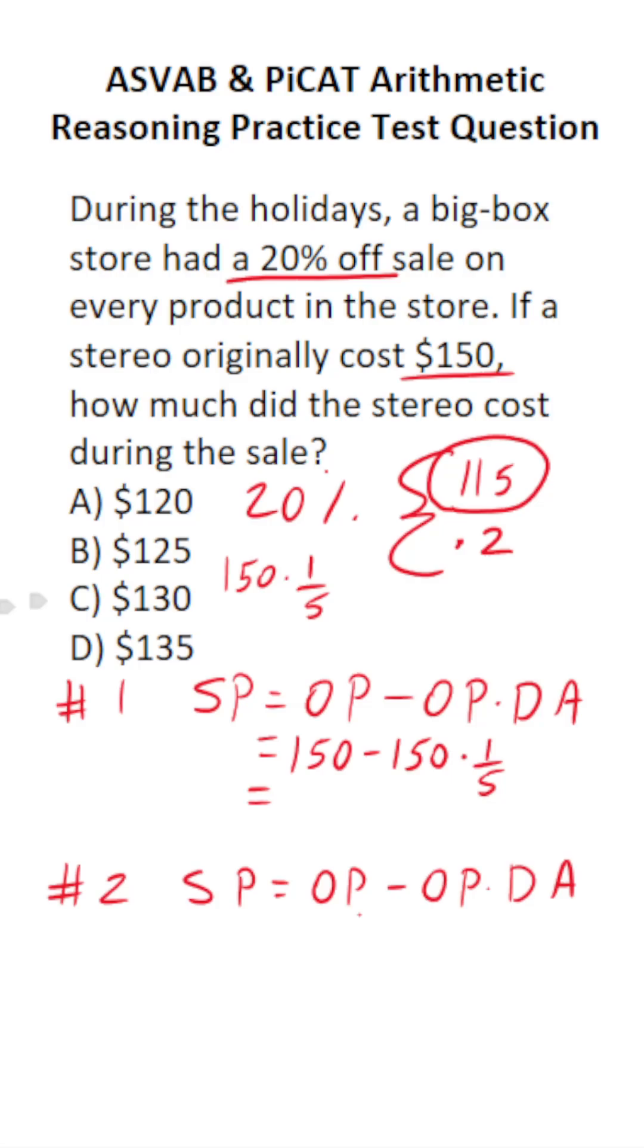All right, so I'm going to rewrite 150 to be a fraction by placing it over 1. Before I multiply these two fractions, I can cross-reduce. 5 goes into 5 one time. 5 goes into 15 three times. Therefore, it goes into 150 thirty times. This is 30 over 1, which is just 30. 1 over 1 is just 1. 30 times 1 is 30. So this becomes 150 minus 30, which is 120.